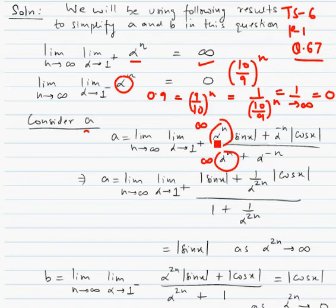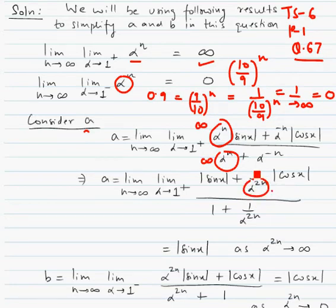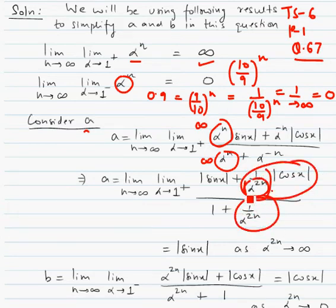To work out this limit, we divide numerator and denominator by alpha to the power n. After dividing, the terms with alpha^n in the denominator approach 0 since infinity is in the denominator. Similarly the other terms approach 0, and the limiting value is mod sin x. Similarly, if we look at the expression where alpha is approaching one from the left-hand side, so alpha is less than 1.